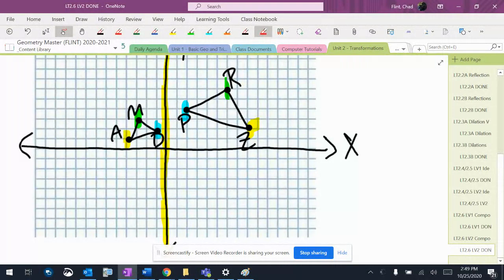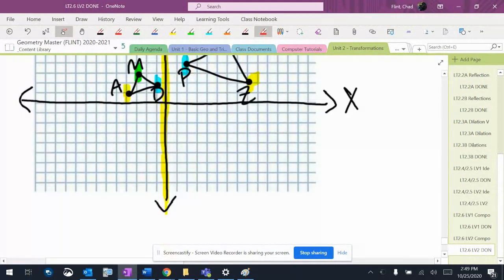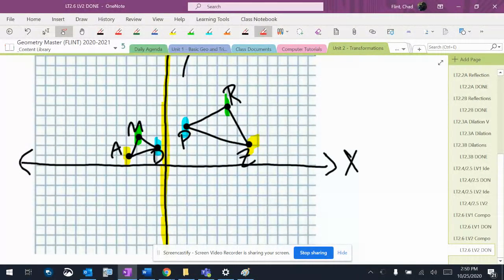So let's reflect it over the yellow line. Alright, so 1, 2, 3, 1, 2. Not there. Don't shoot any jumps like that. 1, 2, 3. D is gonna end up here.